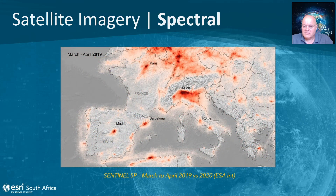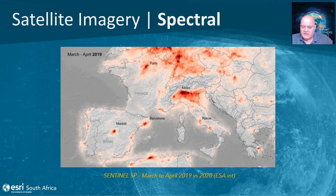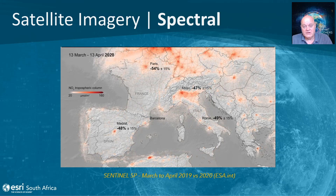This picture illustrates a Sentinel-5P satellite, which allows us to look at things like nitrogen dioxide or air pollution. We read the satellite image directly into ArcGIS Pro, which understands the metadata, giving us access to all auxiliary information and enabling processing on it. This example shows nitrogen dioxide levels in March–April last year versus March–April this year, and after lockdown in Europe you can see the dramatic decrease in air pollution levels.